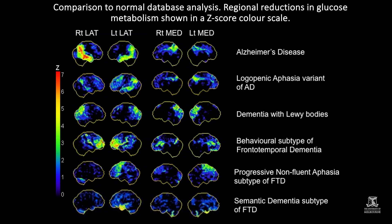There are different patterns for different neurodegenerative diseases on brain FDG-PET. Not only do we see the classical Alzheimer's disease appearance in the top row, there's the logopenic aphasia variant of AD which looks like AD but is more left-sided predominant. Dementia with Lewy bodies shows hypometabolism in the parietal and occipital cortex sparing the posterior cingulate. The behavioral subtype of frontotemporal dementia shows hypometabolism in the frontal lobes, in peri-insular areas, and in the anterior striatum.